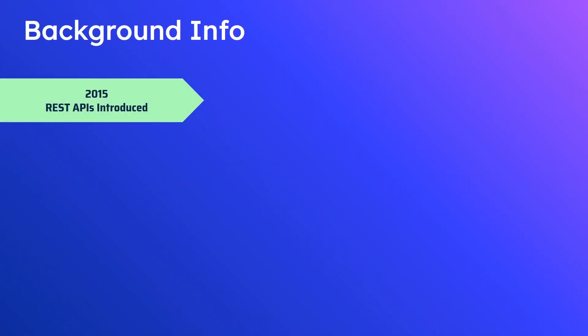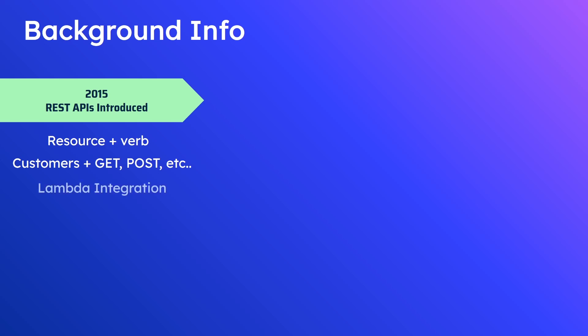It all started in 2015 when REST APIs were introduced into API Gateway. REST APIs consist of resources and verbs — resources are things like customers, and verbs are things like GET, POST, and DELETE. Over the years the API Gateway team introduced a whole bunch of useful features that integrate with other AWS services, things like Lambda integration, DynamoDB, S3, and other popular services.